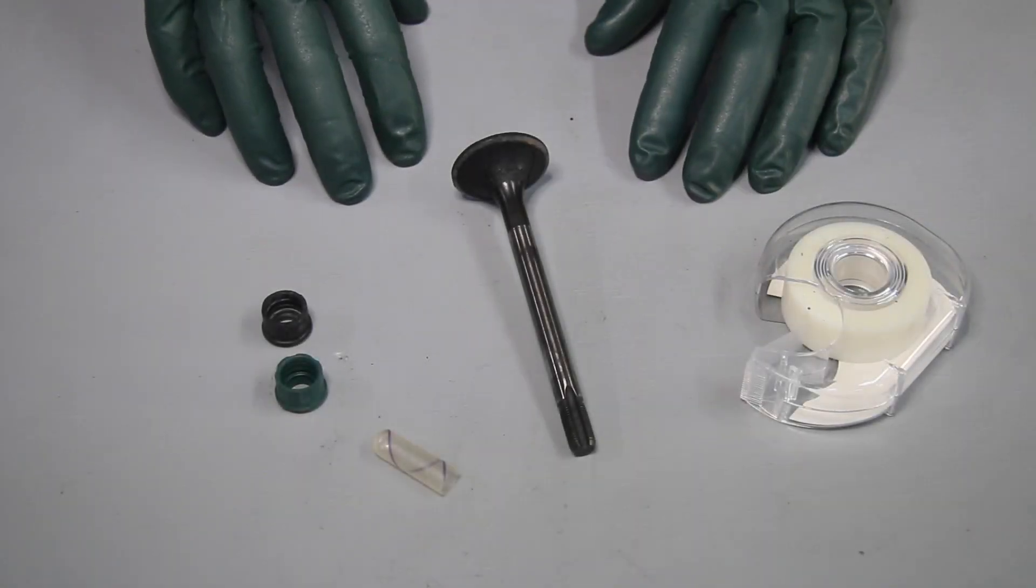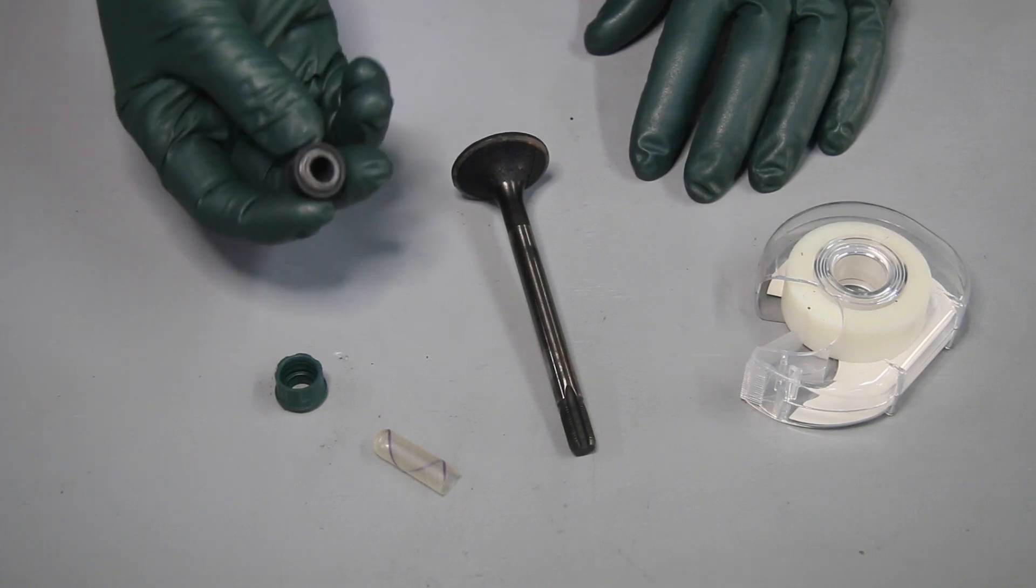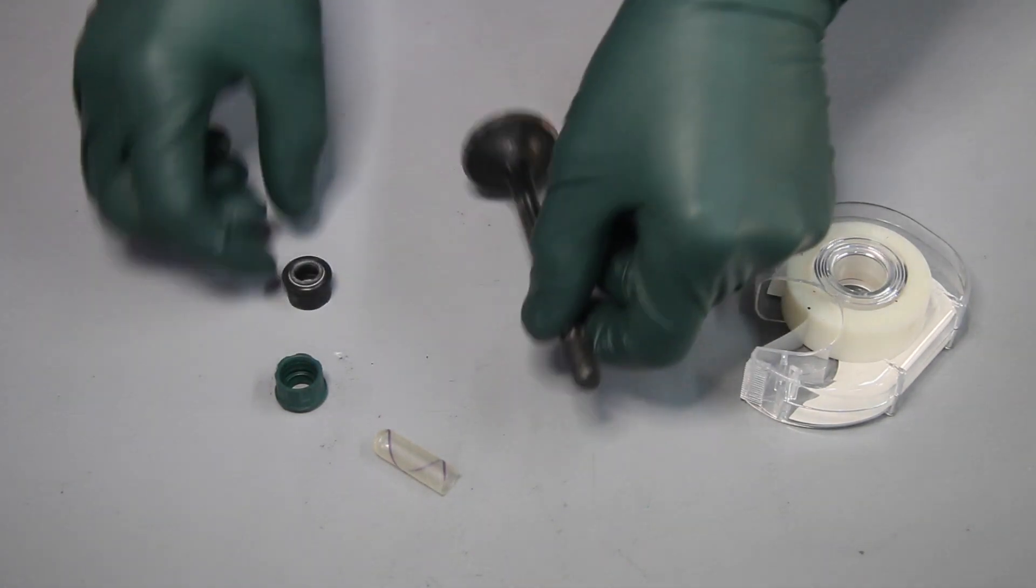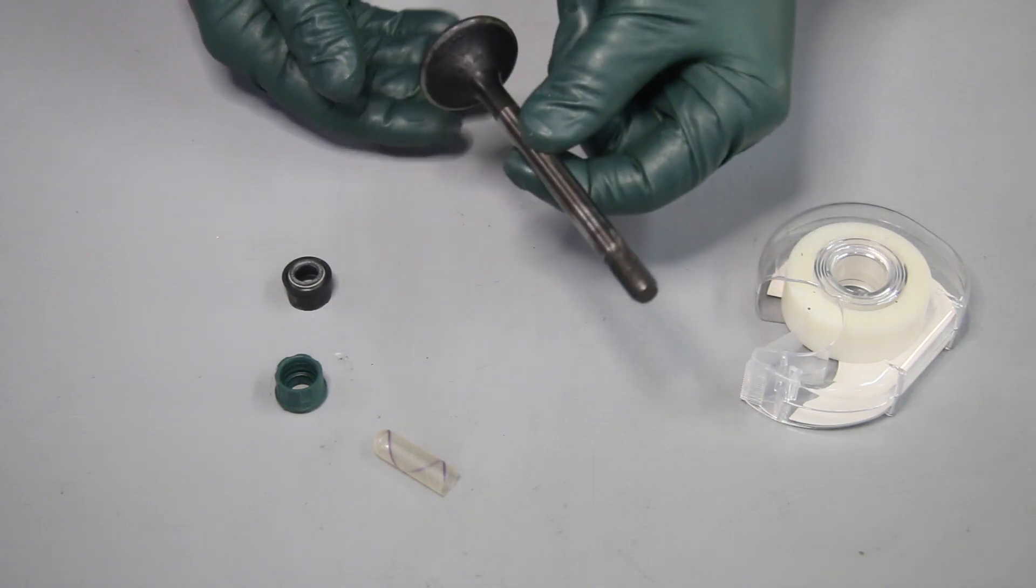This is going to be a video tip on installing valve stem seals. That's a valve stem seal here that goes on over the stem of the valve in a gas or diesel engine.